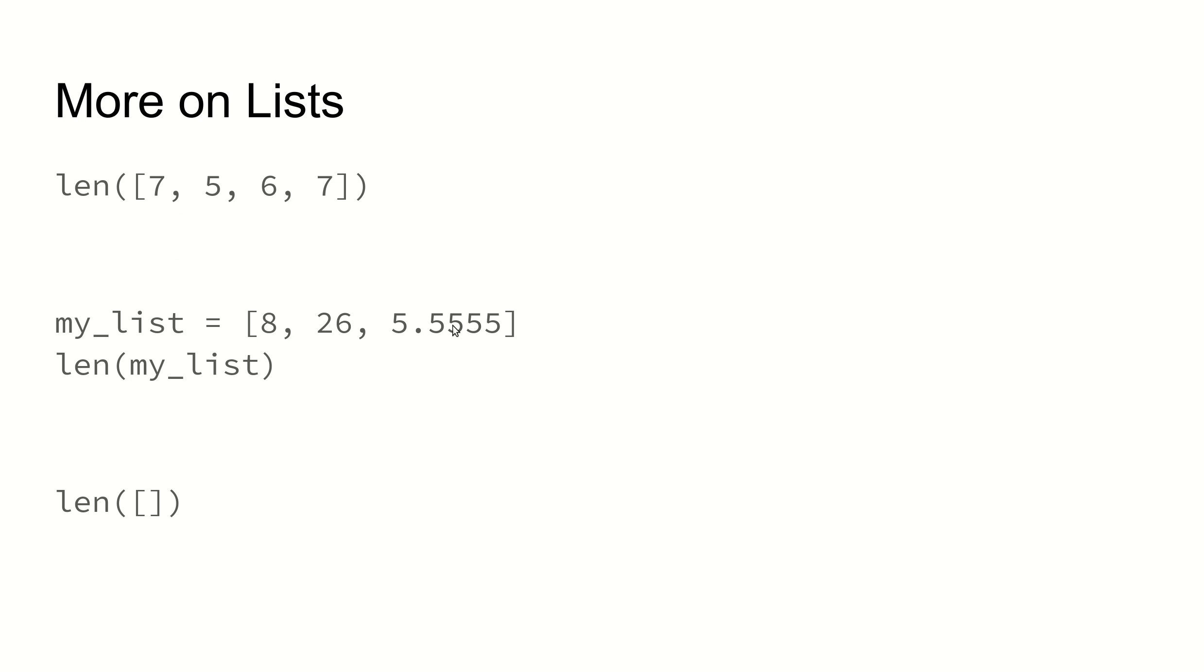Here's another list. It kind of mixes types of numbers, and this is an important thing to recognize about lists in Python. Lists are not very strict in what you're storing in them. You could have a number and a string in your list or any combination of different types of data stored in that list. So here we have two integers and then a real number, also sometimes referred to as a float or a floating point number. Here if I ask for the length of my list it will report 3 because there are three items: 8, 26, and 5.5555.